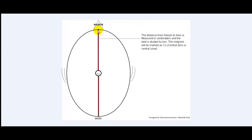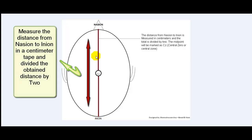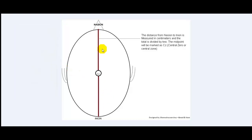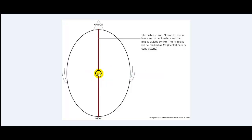Once we define these four locations — nasion, inion, right preauricular, and left preauricular — we can proceed to the next step of measurement. We will measure the distance from the nasion to the inion with a tape measure in centimeters, and divide this distance by two. For example, if the distance from nasion to inion is 32 centimeters, divided by two is 16 centimeters. So 16 centimeters will be the point of Cz, or central zero zone. Now we have established the central zero zone and can proceed to connecting the remaining electrodes on the central area from nasion to inion.